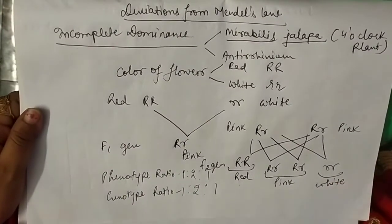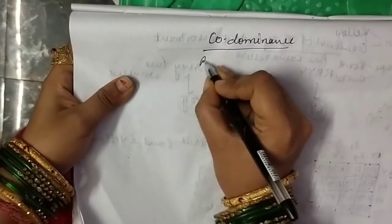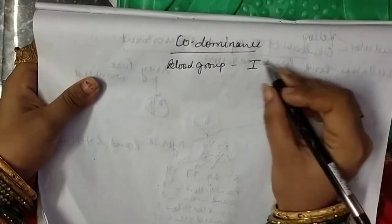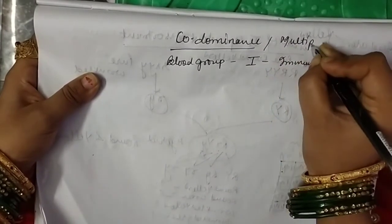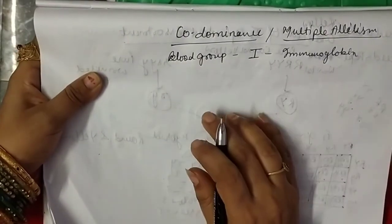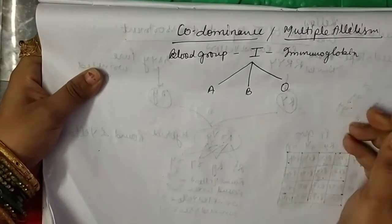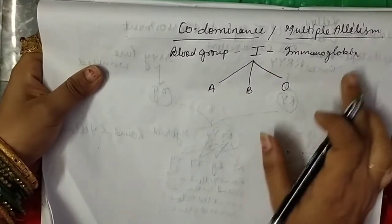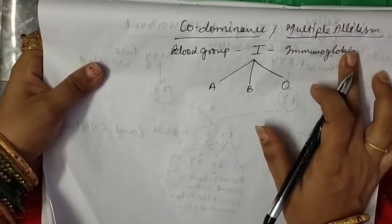The next deviation is co-dominance. Here we take the example of blood groups. Every character of our body is represented by a gene; the blood group character is represented by the gene I, known as the immunoglobulin gene. This concept is also known as multiple allelism. Normally one gene has two forms, but this blood group gene I has three forms: A, B, and O. Since one character has more than two alleles, it is known as multiple allelism.